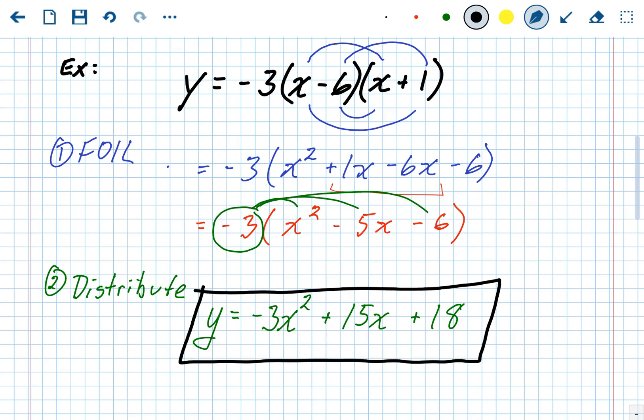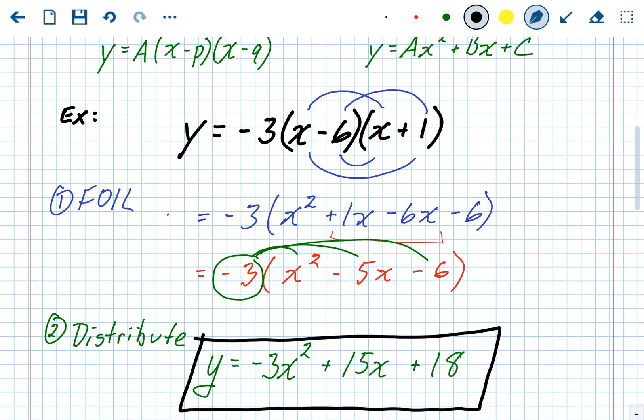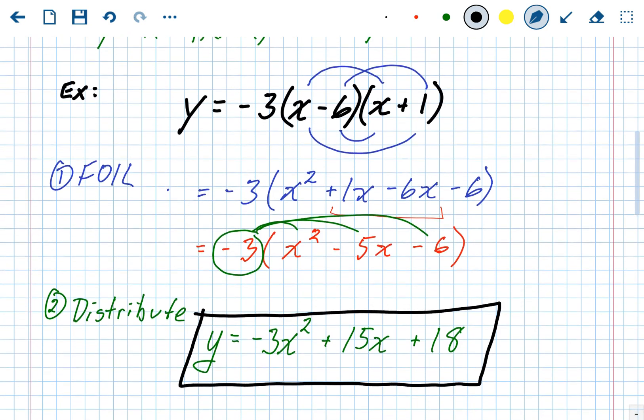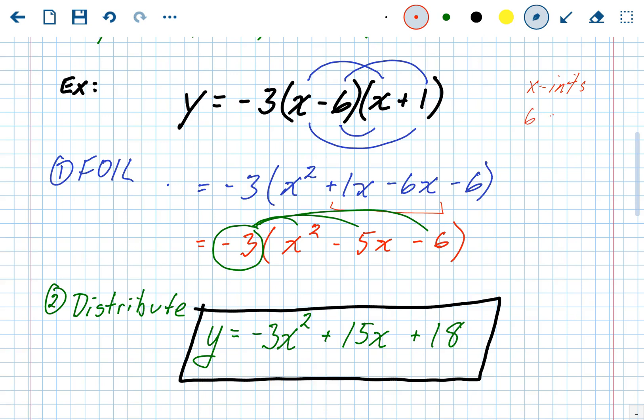Now again, it's not asking for this, it's just asking to convert. But when you're doing these, you should go through and just figure out what you could find. So from the original problem, it was in factored form, so you knew the X intercepts right away. The X intercepts are the opposite, the P and the Q. So the X intercepts in that one was 6 and negative 1.